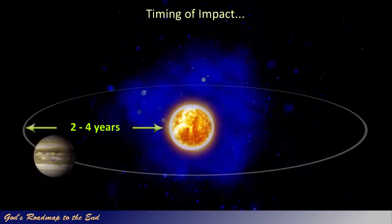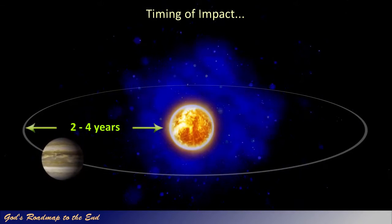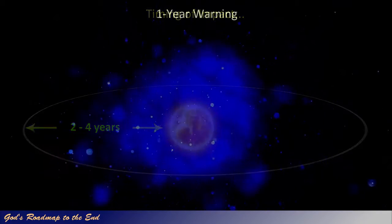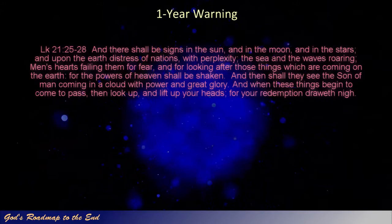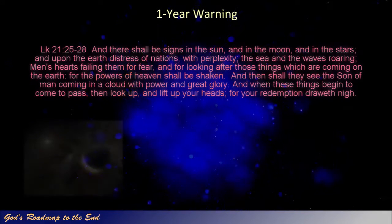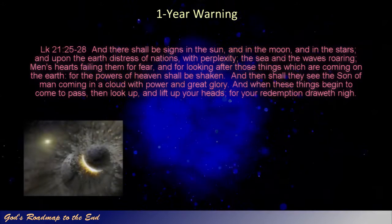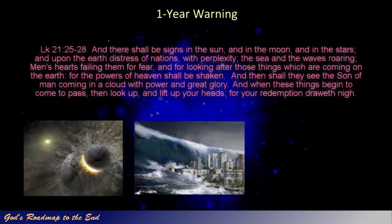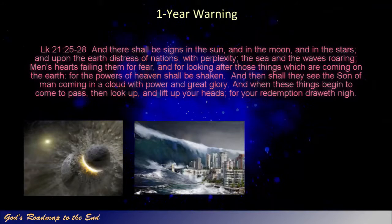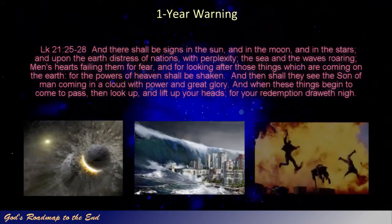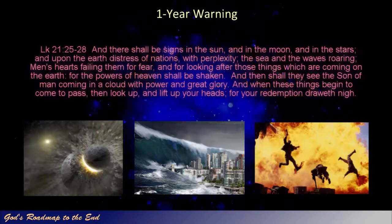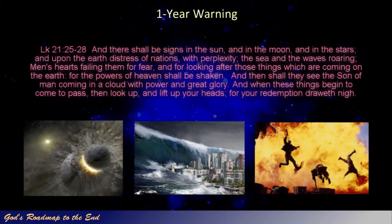One passage that clearly addresses this is Jesus' description of the approaching end times in Luke 21. Luke 21 verse 25 to 28: And there shall be signs in the sun, and in the moon, and in the stars, and upon the earth distress of nations with perplexity, the sea and the waves roaring, men's hearts failing them for fear, and for looking after those things which are coming on the earth, for the powers of heaven shall be shaken. And then shall they see the Son of man coming in a cloud with power and great glory. And when these things begin to come to pass, then look up and lift up your heads, for your redemption draweth nigh.